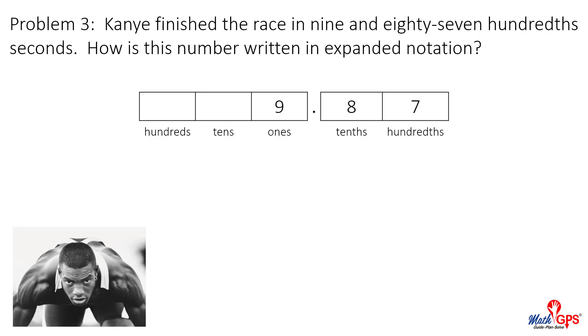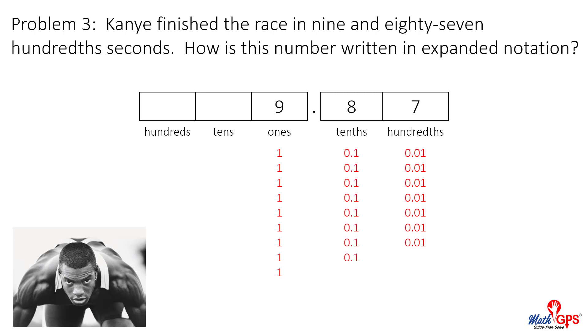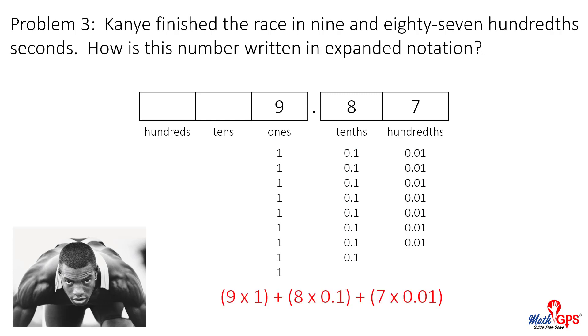The number is shown in a place value model. The value of each digit is shown. Using expanded notation, the value is nine times one, plus eight times one-tenth, plus seven times one-hundredth.